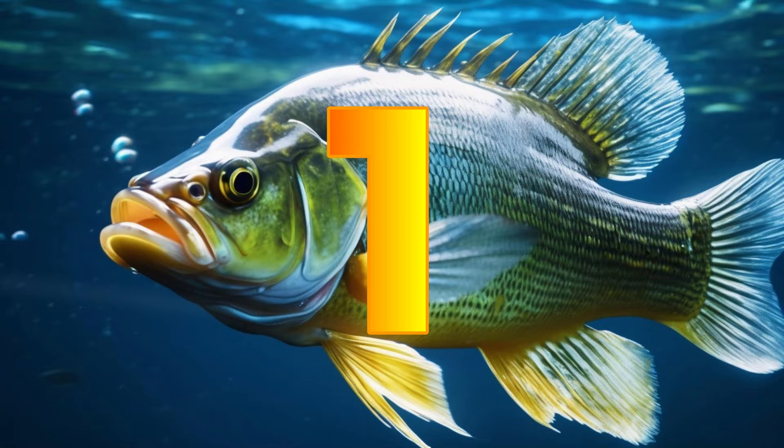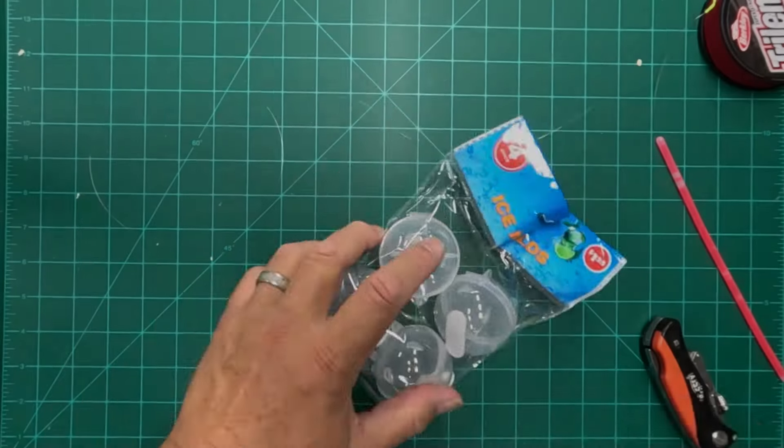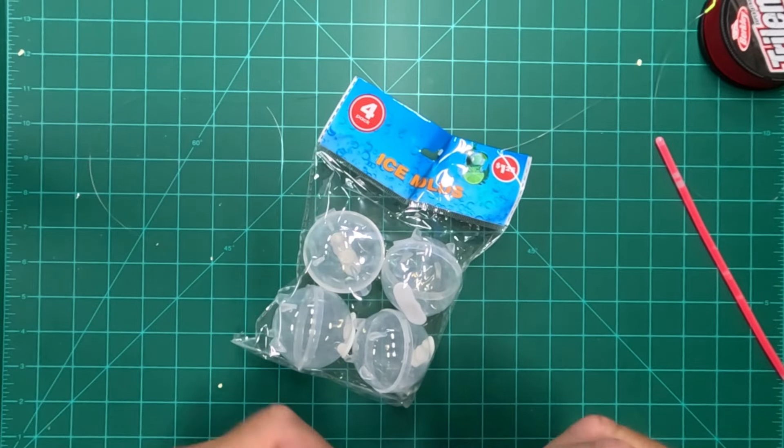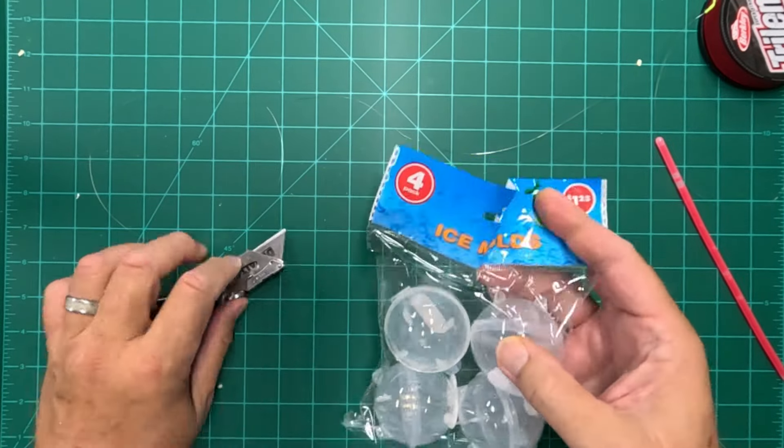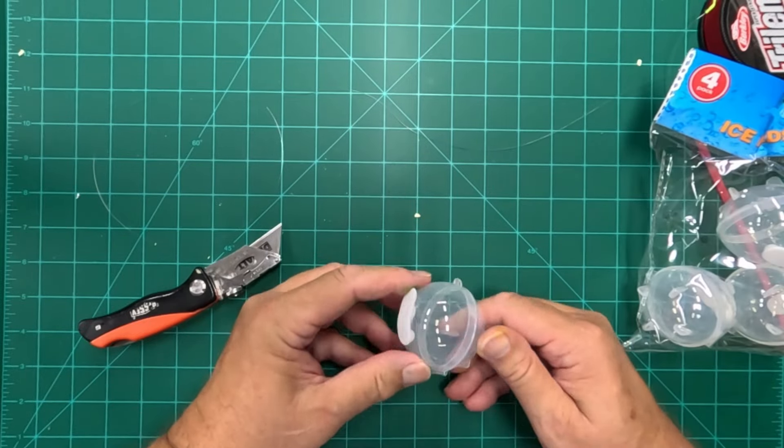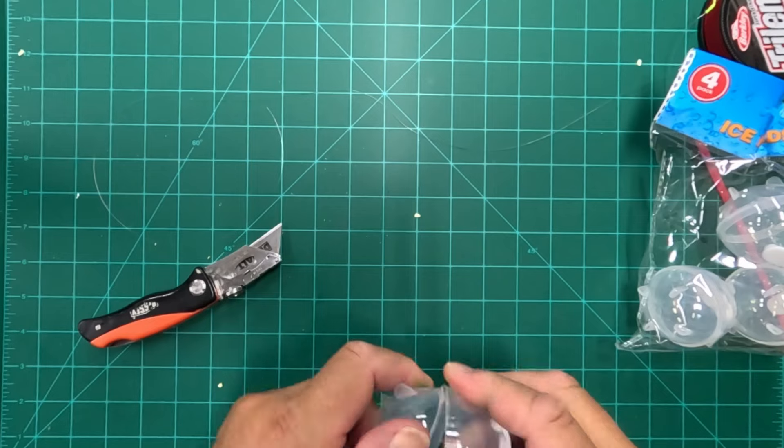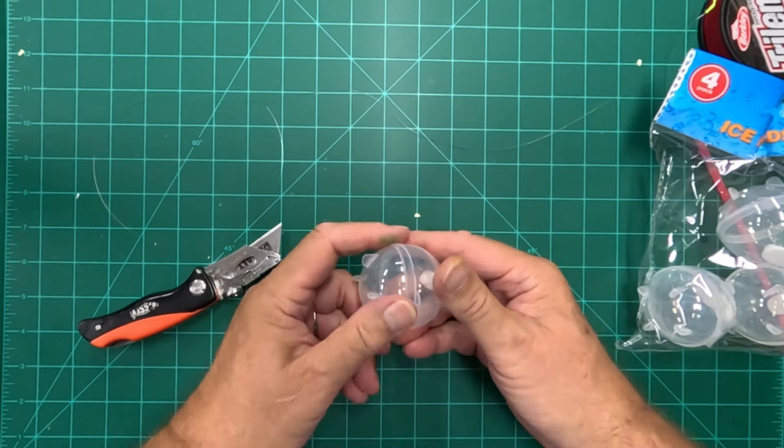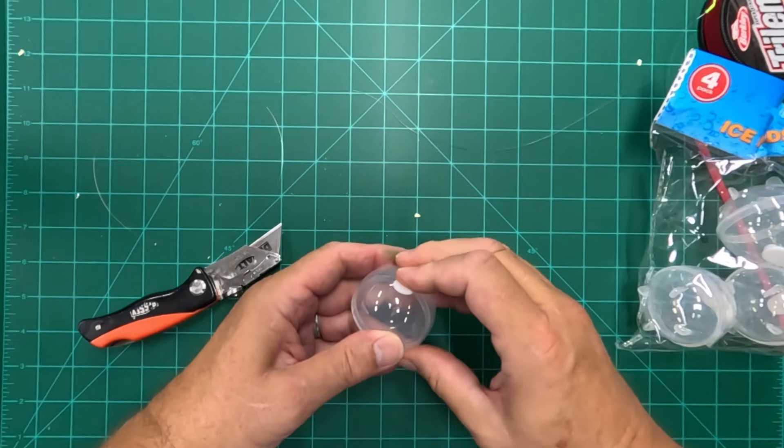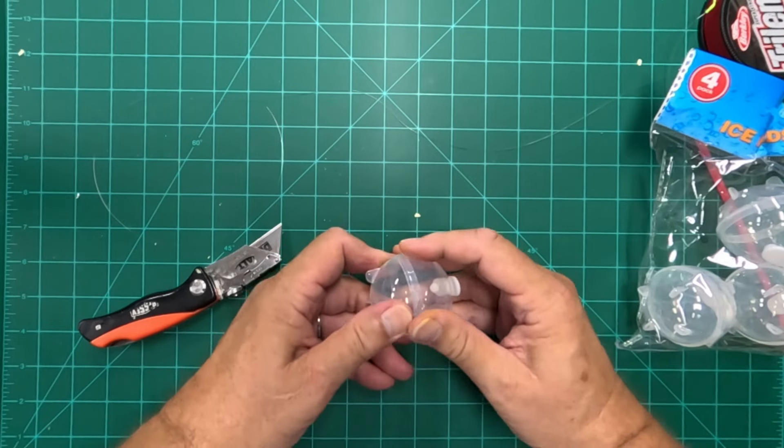Hack number one. Found these at the Dollar Tree for $1.25. They're called ice molds. I'm guessing what these are for is they open in two parts, so you close them, fill them up with water, and then you've got a nice round ice cube.